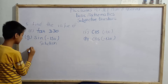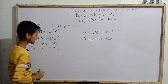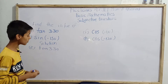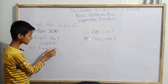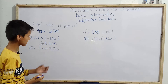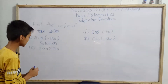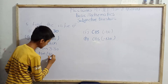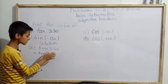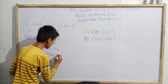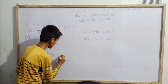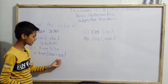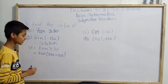First we'll solve part e, that is tan 330°. As I told you, whenever we have to solve such a problem we write them in terms of 180°, but this time we will not write in terms of 180°. Since 330° is nearly about 360°, we'll try to write it in terms of 360°. So tan 330° can be written as tan(360° - 30°).